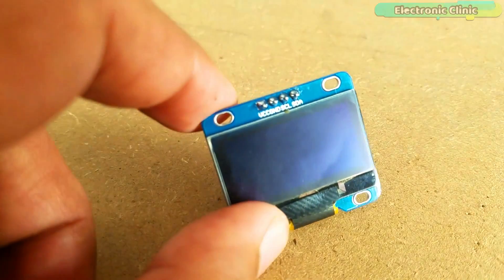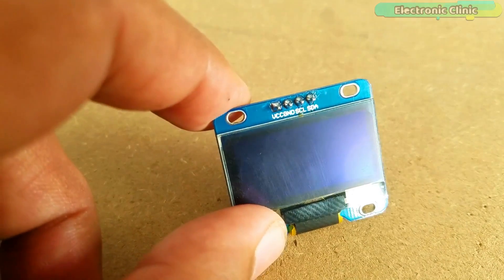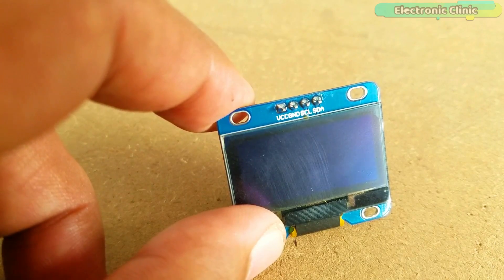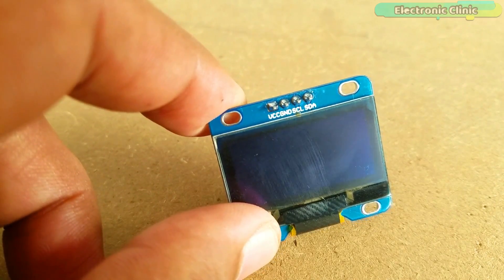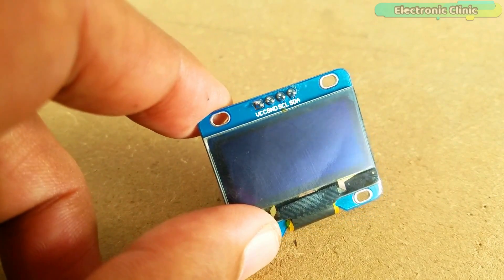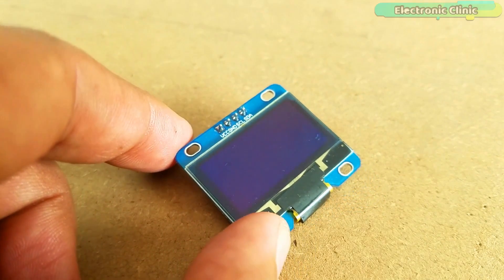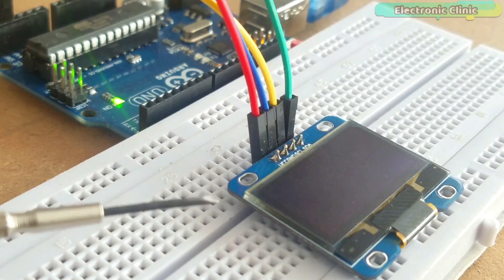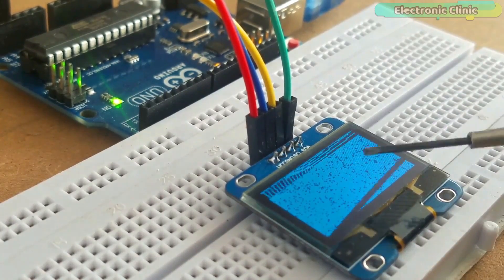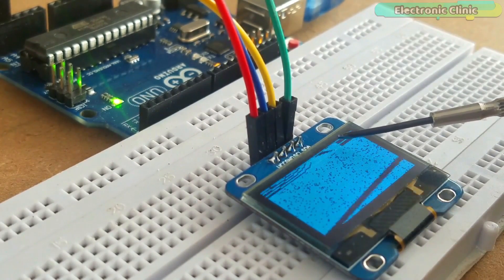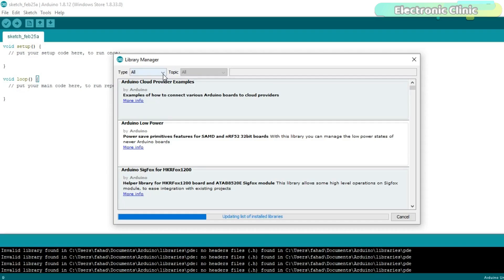This display module has a total of 4 male headers which are clearly labeled as VCC, Ground, SCL and SDA. If you want to know more about this OLED display module, then watch my previous tutorial which explains the extreme basics including the interfacing, solving some basic issues, downloading the libraries and so on.